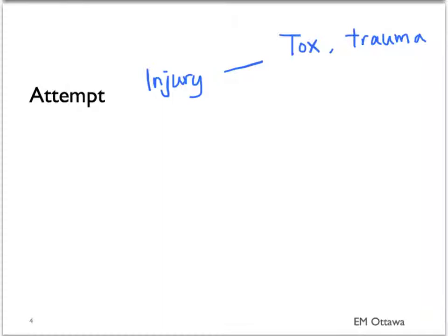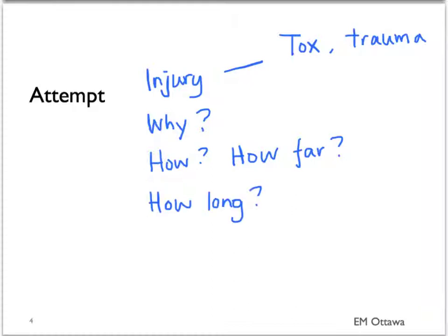We need to make sure the patient is stable before we assess the psychiatric component of the attempt. Once they're stable, we can clarify more about the attempt. We need to find out whether there is a particular trigger or stressor that made the patient attempt that particular day, what they were planning and how far did they go with the planning, and how long they've been thinking about and organizing this plan. If they did not attempt, what stopped them? And what was going through their mind during the attempt?